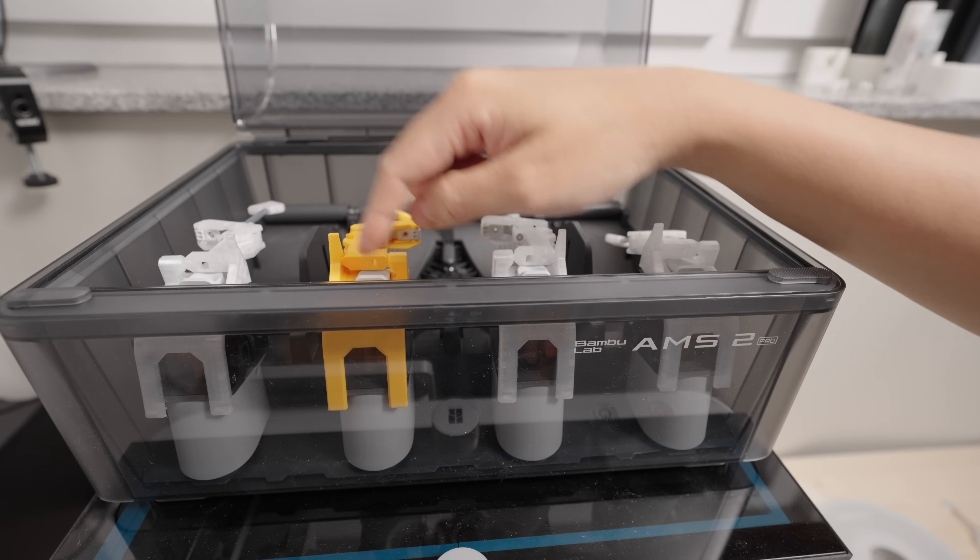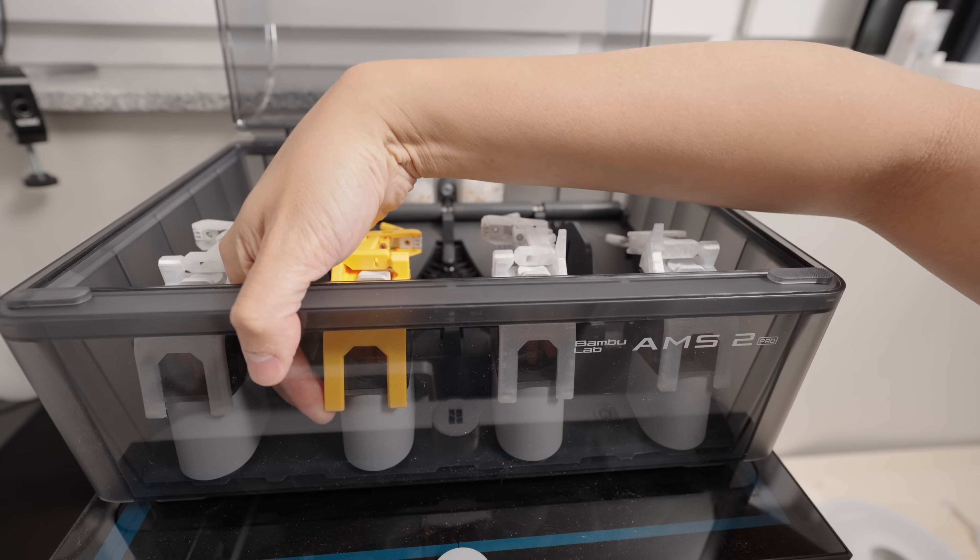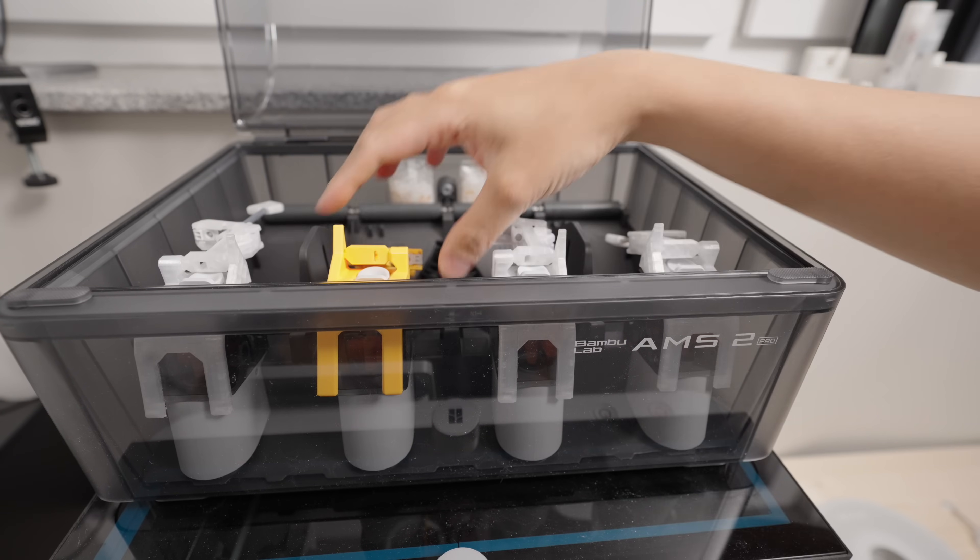To remove the snack cutter you simply reach your hand in the AMS and push the bracket upward gently to release it.